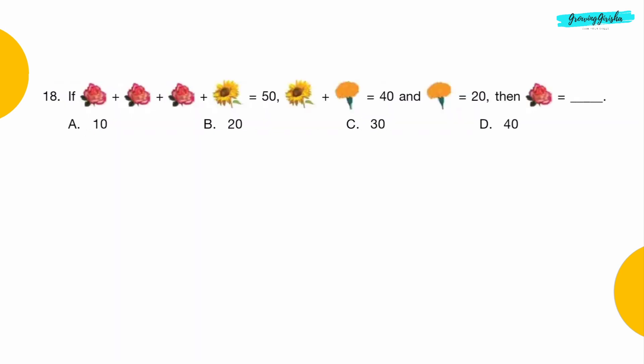Question 18: If rose plus rose plus rose plus sunflower is equal to 50, sunflower plus daffodil is equal to 40, and daffodil is equal to 20, then rose is equal to dash. Option A: 10.